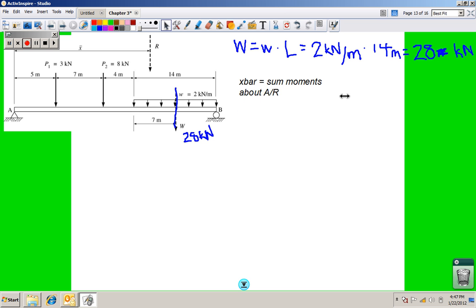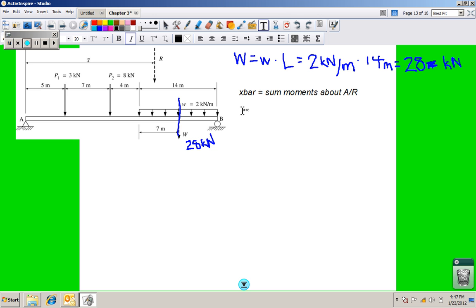So when we look at that, let's start with talking about what is R. R is 3 kilonewtons, and that's a negative direction. Then it's also plus the negative 8 kilonewtons force. Plus then we have the weight, that capital W, and that is also a negative 28 kilonewtons. On a good day, that means R will be equal to, let's see, 11 plus 28. I'm pretty sure that's 39 on a good day. So the resultant is a negative 39 kilonewtons.